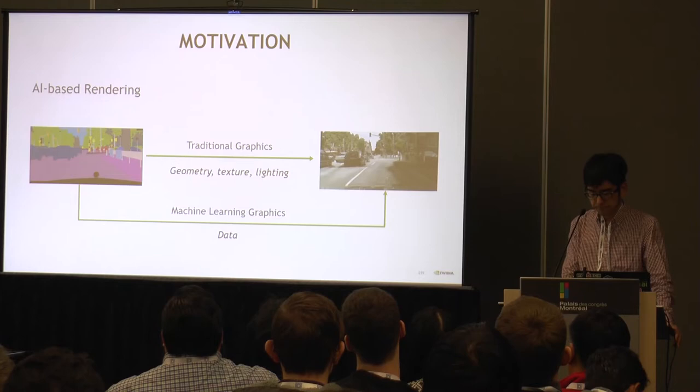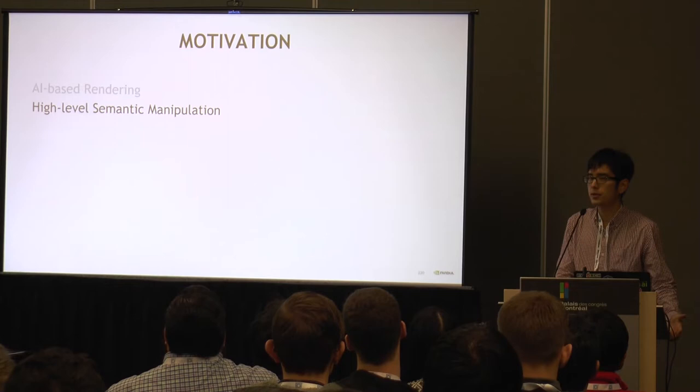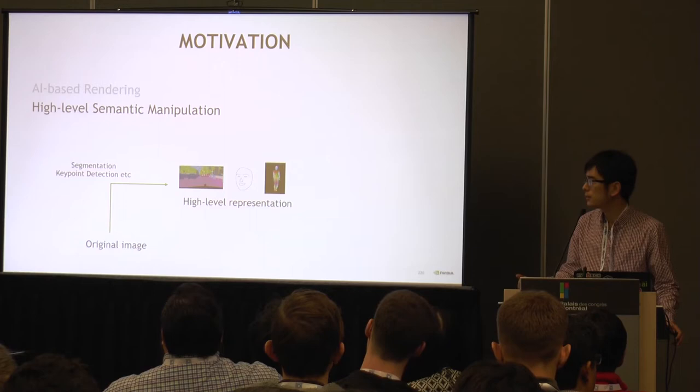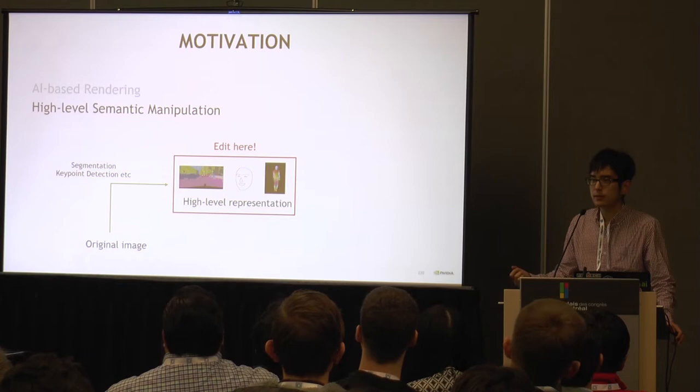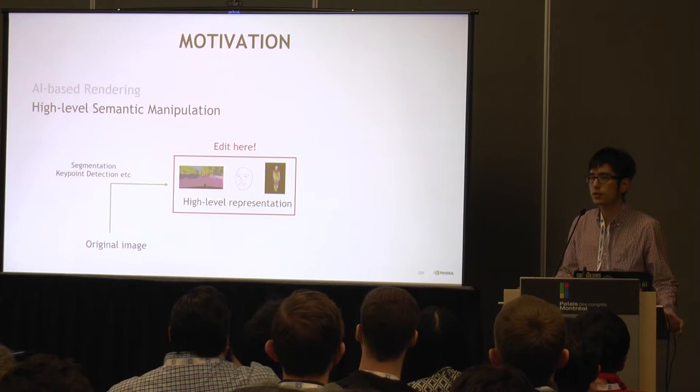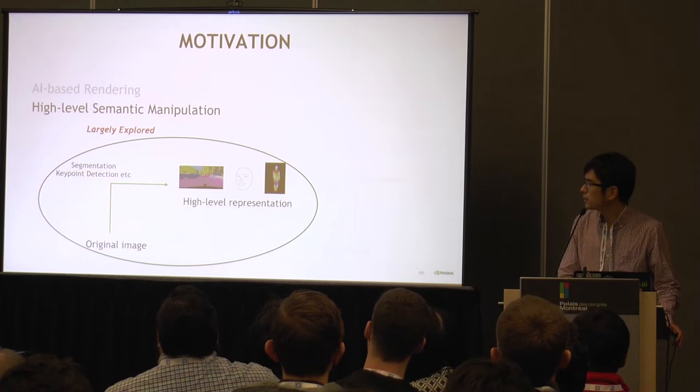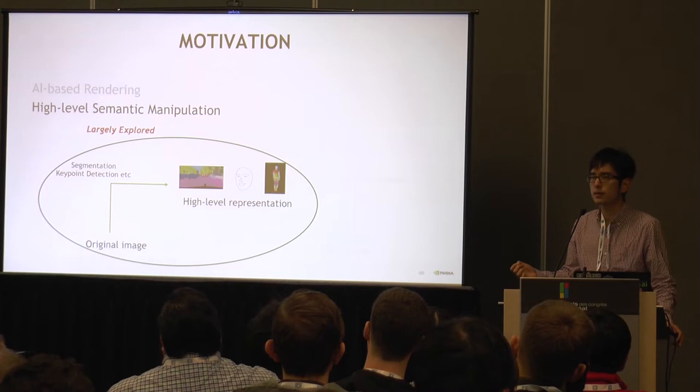The second application is high-level semantic manipulation. Starting from some original video or image, you can first turn it into some high-level representations like semantics, edges, or key points. Then it's usually much easier to edit here — for example, you can simply add objects, remove objects, or change the shape of an object. After you're done with the editing, you can turn them back to the photorealistic image. This part of the pipeline is already largely explored with segmentation and detection algorithms, but the synthesis part is still little explored, and it's the goal of this work.